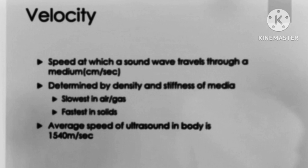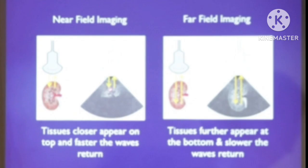The speed of a sound wave travelling through a medium is determined by the density and stiffness of the media. Velocity is slowest in air and gas, but fastest in solid. The average speed of sound in the body is 1540 meters per second. In near-field imaging, tissue appears at the top and the wave returns faster. In far-field imaging, tissue appears at the bottom and the wave returns slower.